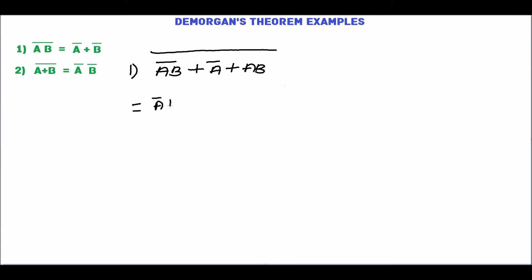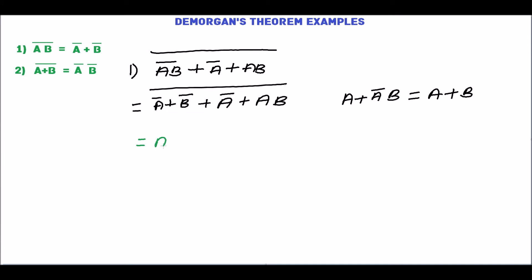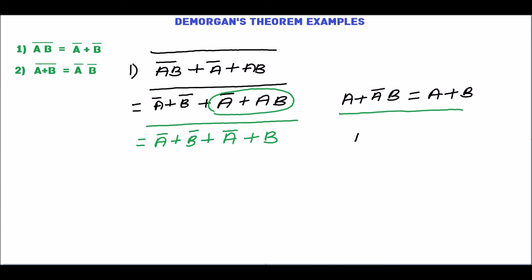AB complement can be written as A complement plus B complement based on De Morgan's theorem, plus A complement plus AB whole complement. From a basic theorem, we can write A plus A complement B equal to A plus B. So, write A complement plus B complement as it is, then write A bar plus AB as A bar plus B based on this theorem, then write whole complement. Then A plus A equal to A, and A plus A complement equal to 1. Based on these two, we can write A bar plus A bar equal to A bar, plus B bar plus B equal to 1.